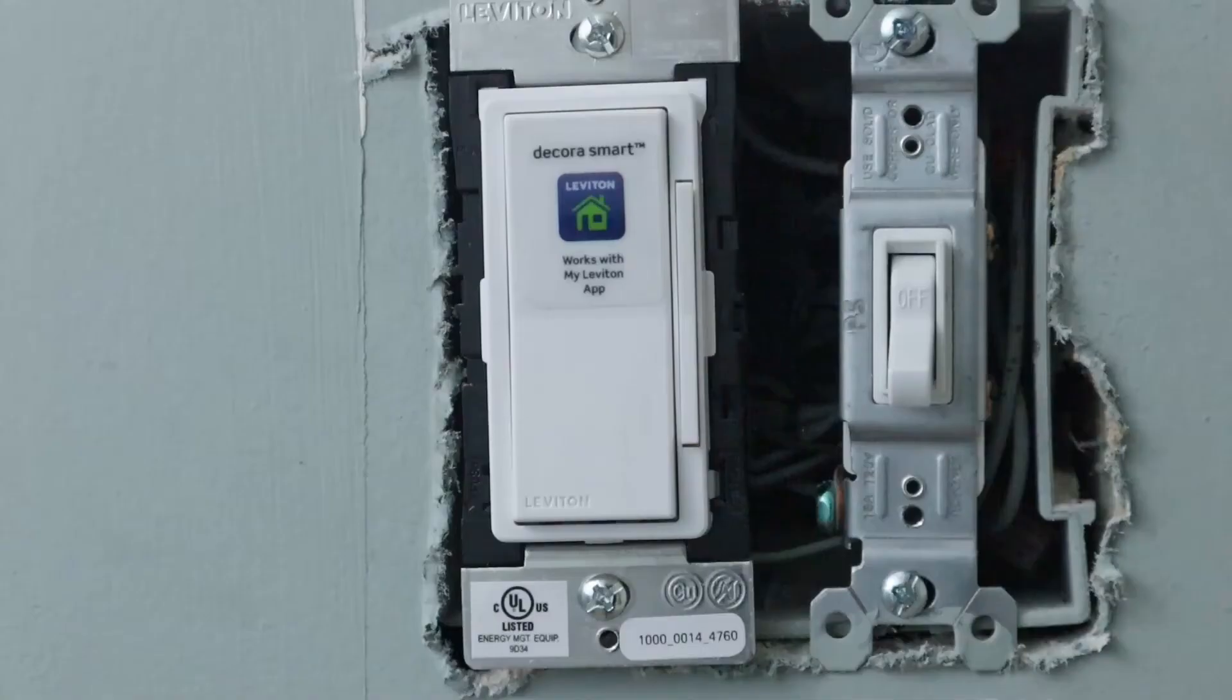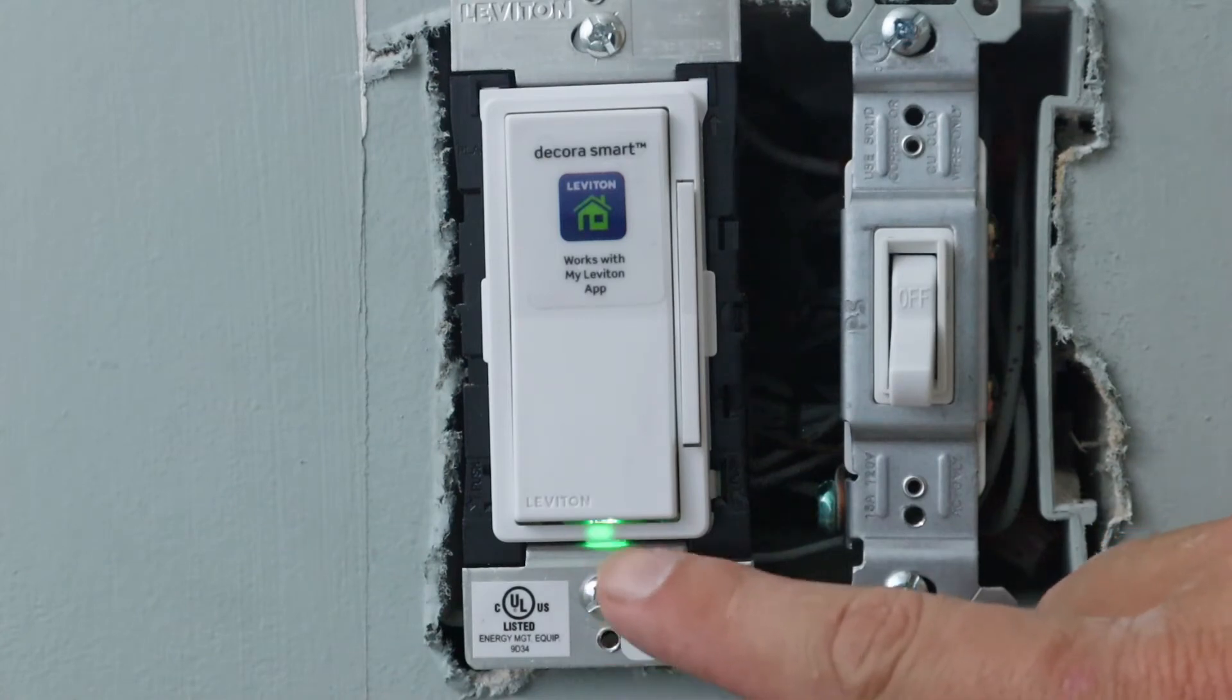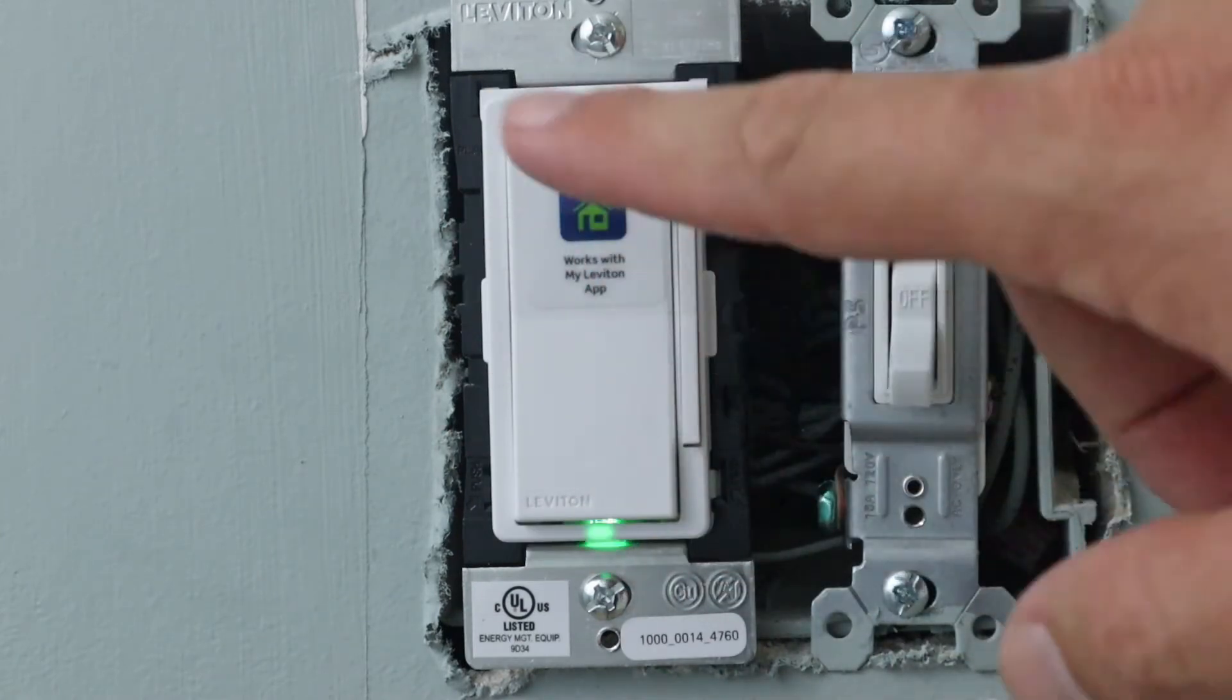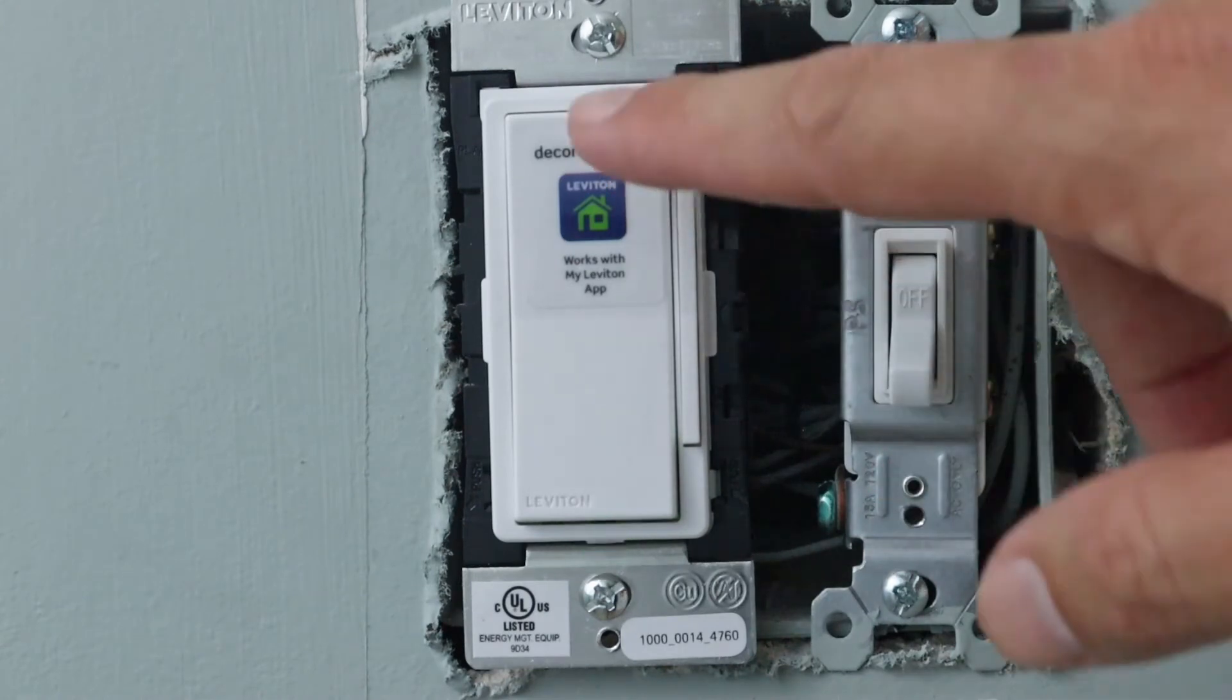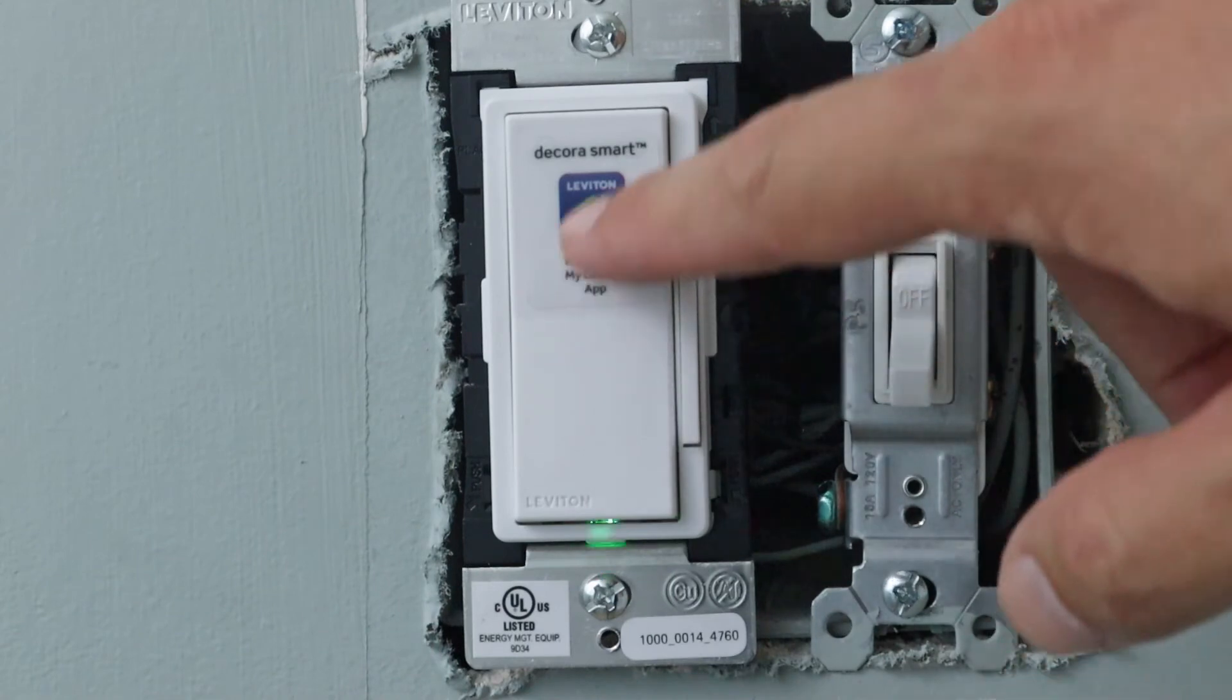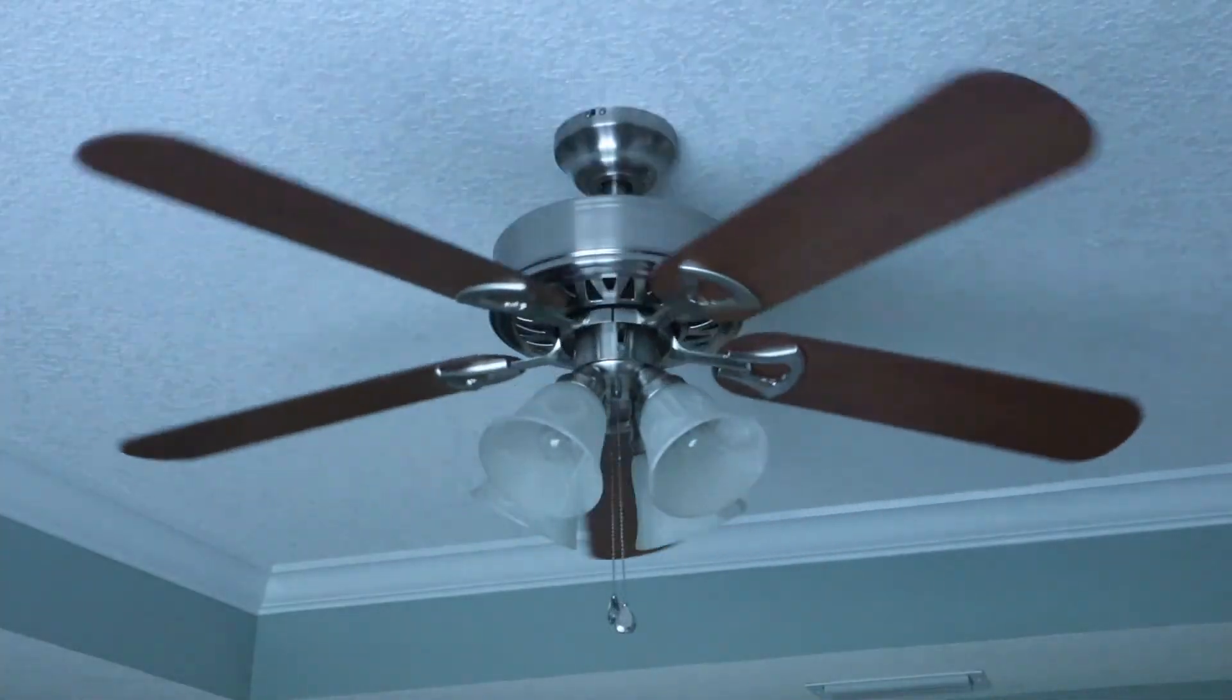All right, so now as you can see there's this green light that's flashing, and what that's trying to tell us is it's trying to connect to Wi-Fi, which we haven't set that up yet. I'll do that a little bit later. I just want to go over the features, the manual features of this switch first, which are pretty easy to understand. Of course, you've got this rocker switch. This is just a sticker, this will come off. This is just a rocker switch. If you push it on, the fan comes on, which it is working, and if you push on the bottom part it turns it back off.